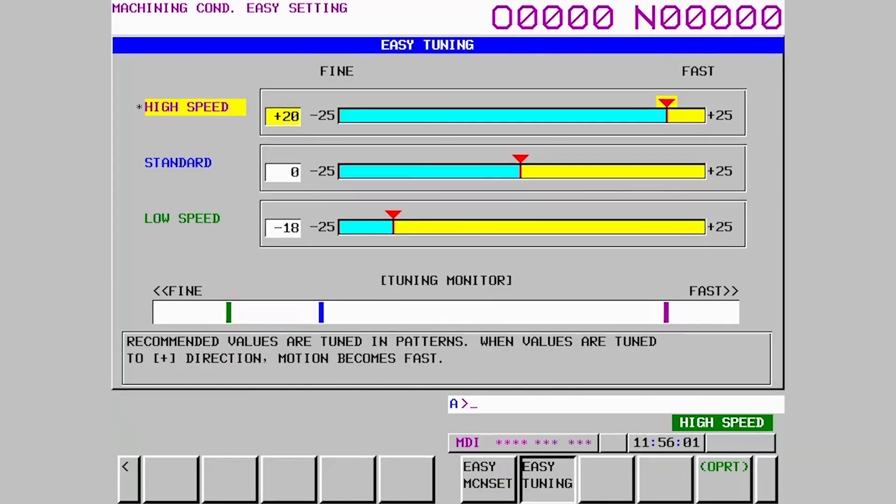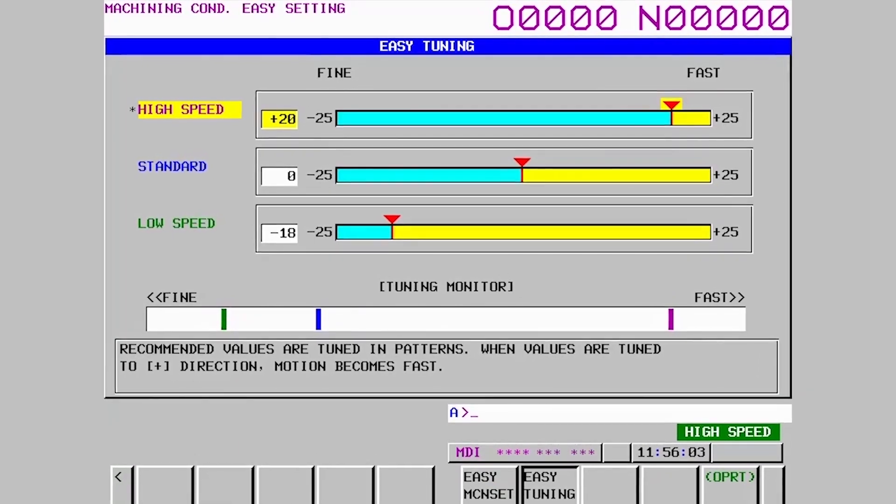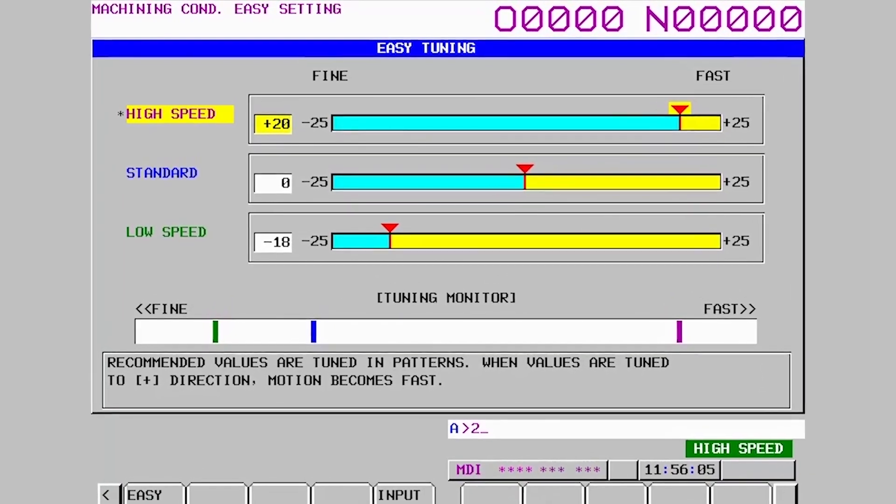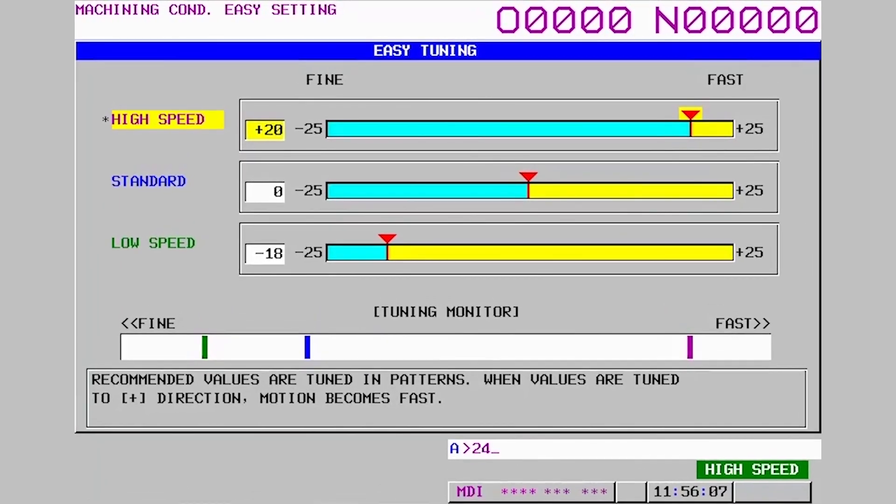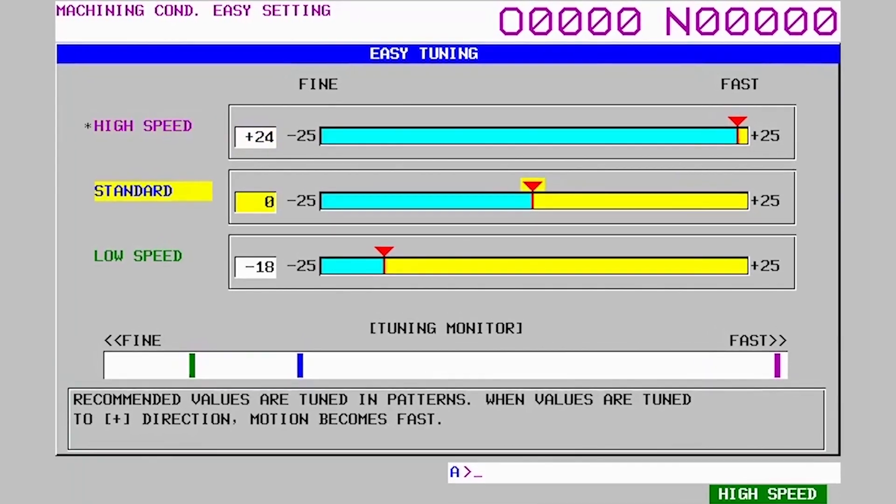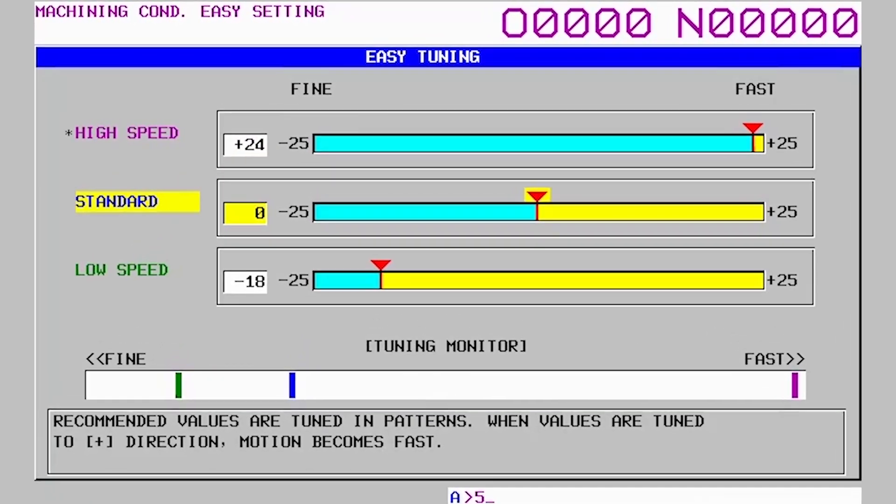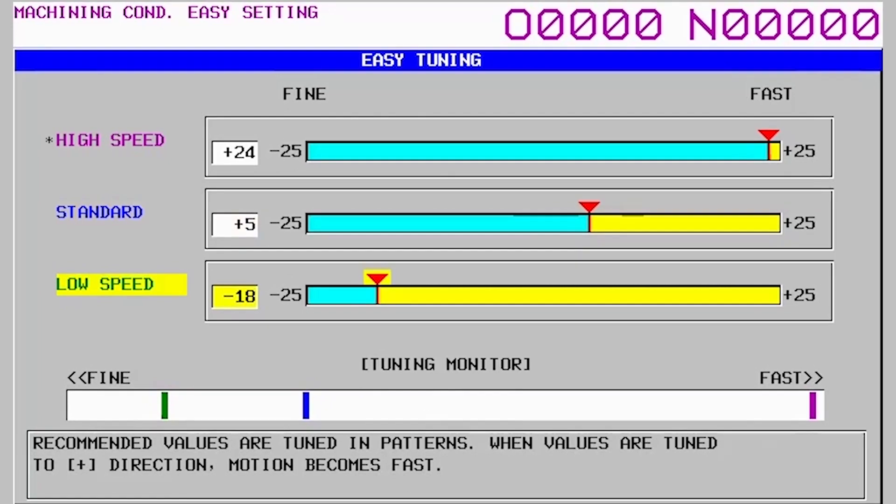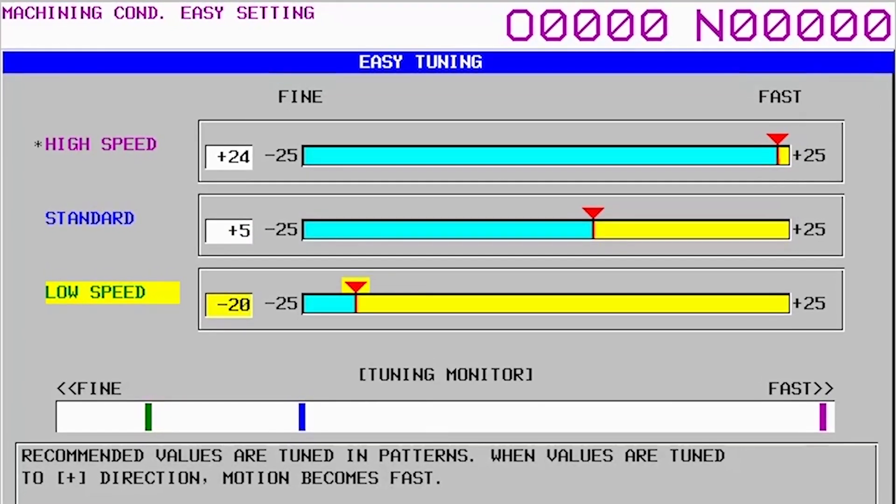Luckily, FANUC has addressed this with Machining Condition Easy Setting Screens. The Easy Tuning Screen has three levels, with each level having a simple slider to adjust the speed versus accuracy of each setting level. The Easy Setting page allows for more detailed control over the related parameters, if needed for the application.